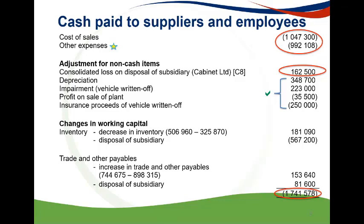Note 1 of the additional information specifically stated that the amount written off for the vehicle was included in other expenses. As a write-off is not an outflow of actual cash, it should be added back. The insurance proceeds would effectively set off the amount written off — many students used the net amount; however, as good exam technique, always use gross amounts and show the individual inflows and outflows instead of net amounts.